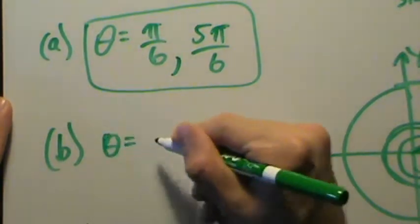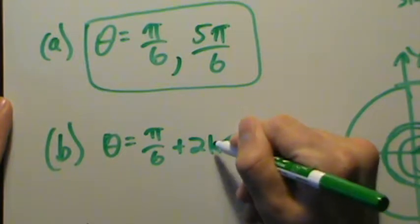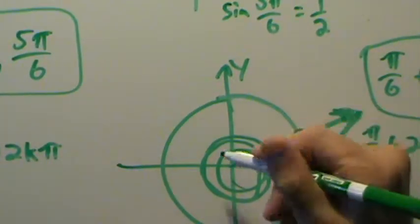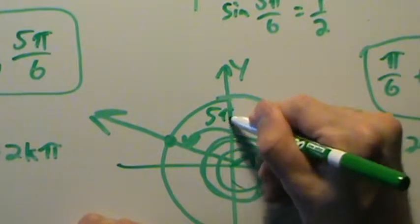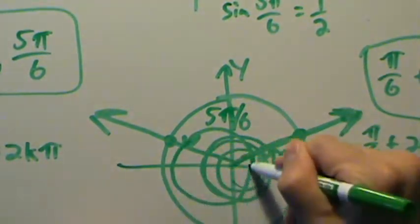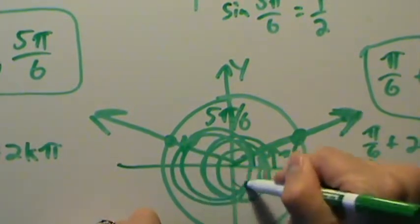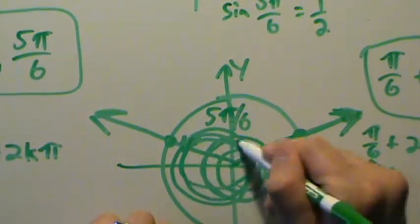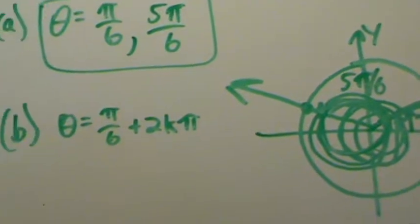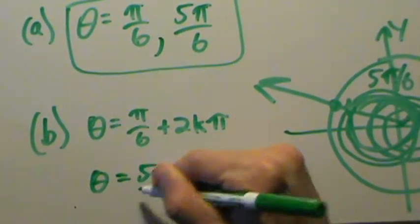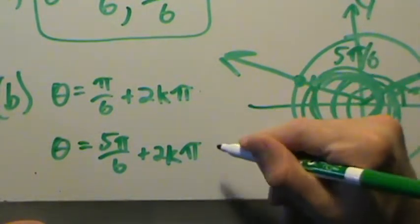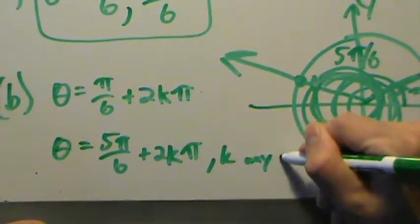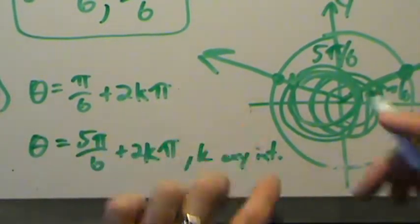So for part B, one general solution is theta = π/6 + 2kπ. We can do the exact same thing with 5π/6 — go around the unit circle one more time: 5π/6 + 2π, then 5π/6 + 2·(2π), 3·(2π), 4·(2π), and so on. So the other general solution is theta = 5π/6 + 2kπ, where k is any integer.